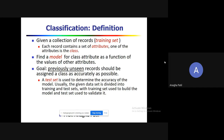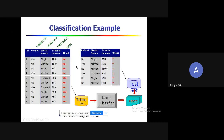Here is an example. We have a dataset with attributes: TID, refund, marital status, taxable income, and cheat. The task is to classify each record into the class label cheat, which has two possible values: yes or no. Based on the training set, we analyze combinations such as refund status, marital status, and taxable income to predict the cheat class label.